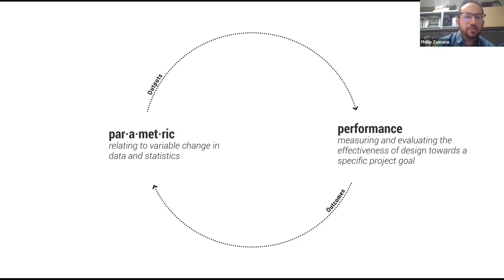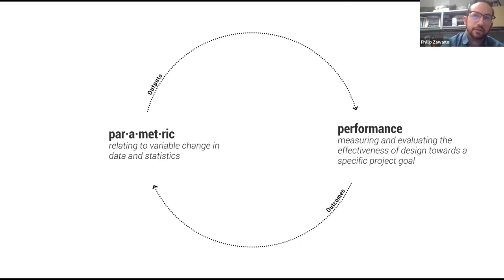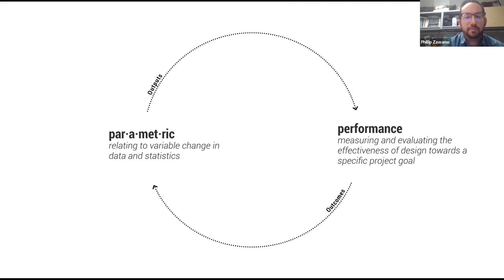When we think about how parametric modeling specifically helps with landscape performance — the measuring of different ecosystem services — parametric modeling helps generate outputs. It doesn't really tell us anything specific; it just gives us generated information. When we take that information and cross-reference it with project goals, objectives, and client needs, that's when we actually understand the outcomes and success of the design. You use the data to reference with these things to develop and evaluate the effectiveness of your design.